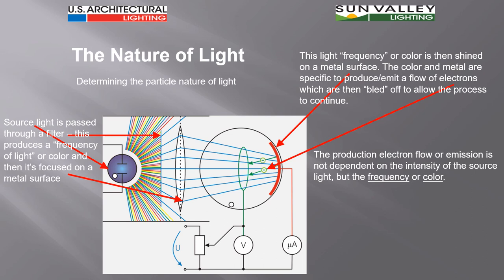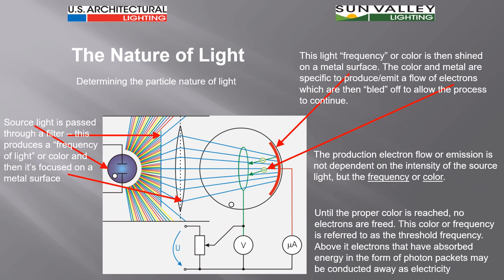The production of electron flow or emission isn't dependent upon the intensity of the light. We don't take the blue light and intensify the blue light in order to get more electron flow, but it's the color or the frequency of the light that becomes important. Until that proper frequency or color is reached, no electrons are freed from the metal, and this color or frequency is referred to as a threshold frequency.